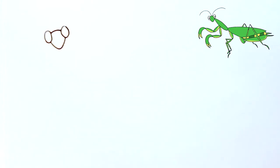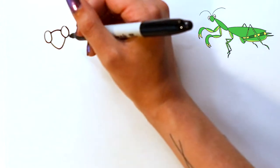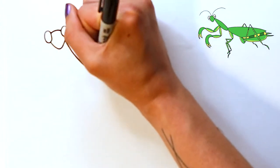Then for the body, you're going to draw kind of a long oval.